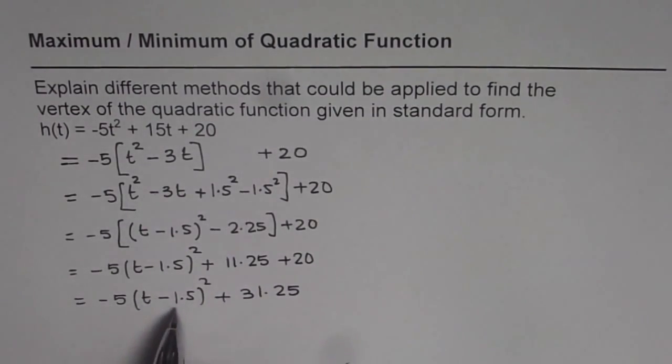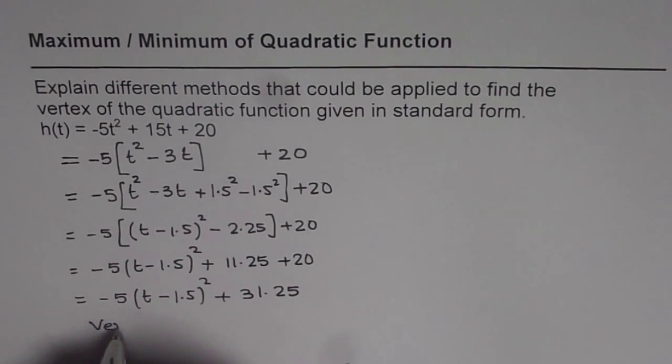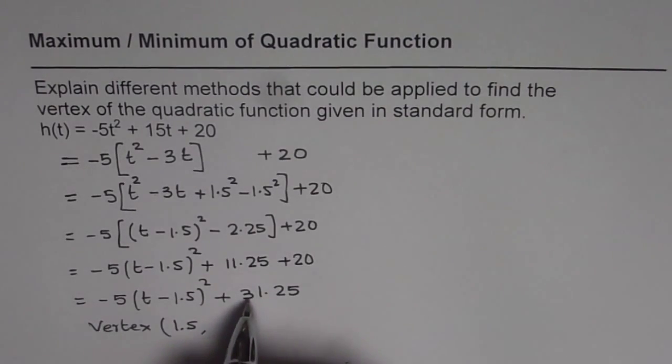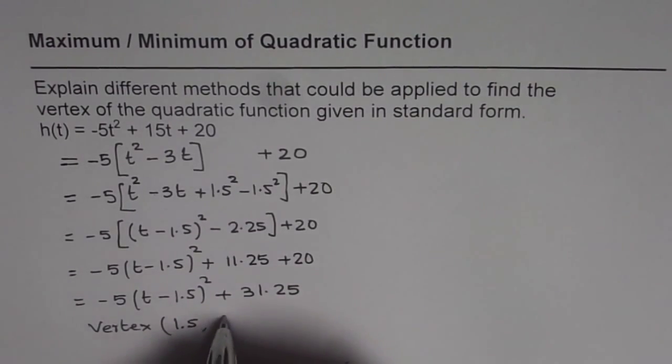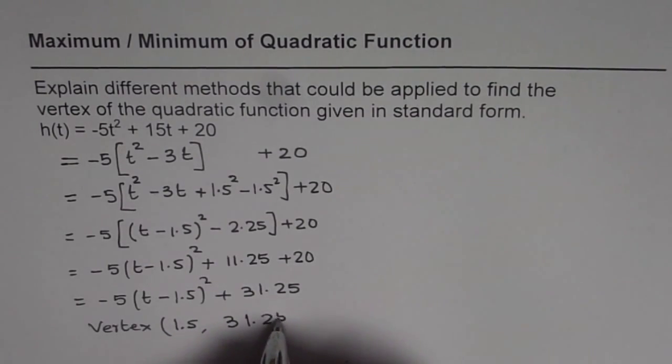Now clearly the vertex point is at t = 1.5. So we can write down the vertex which is (1.5, 31.25). If I write t as 1.5 the first term will be 0, so h(t) will be 31.25.